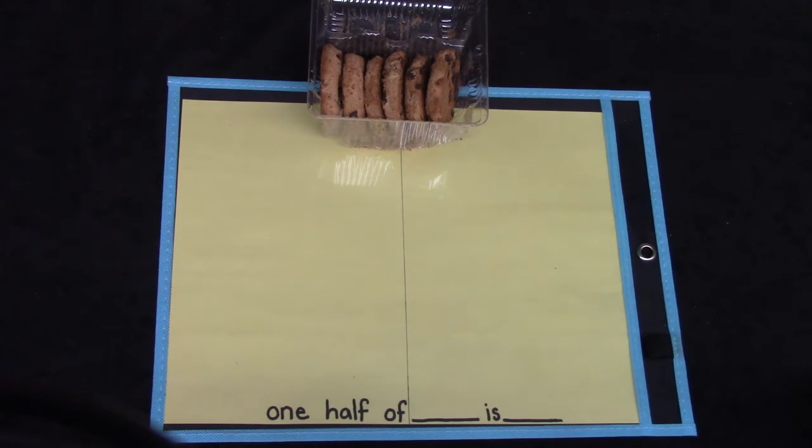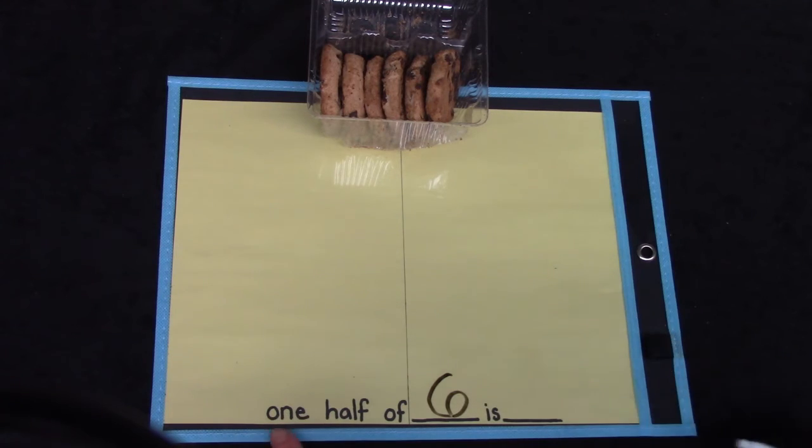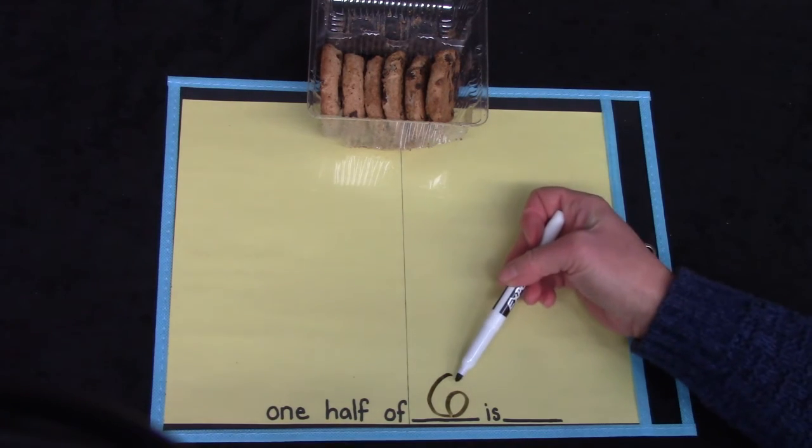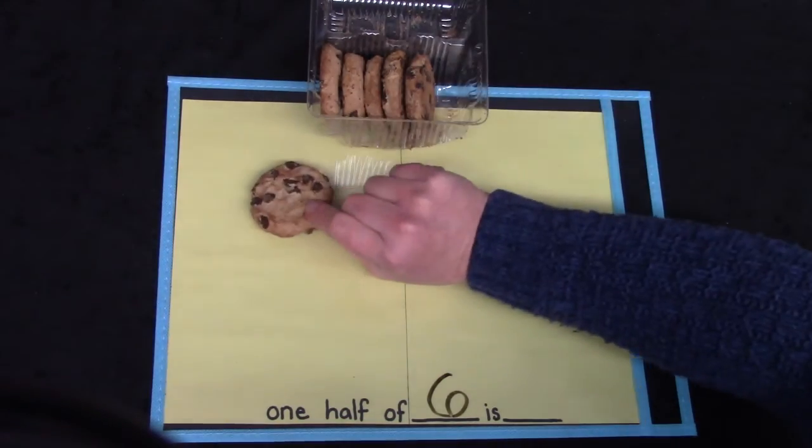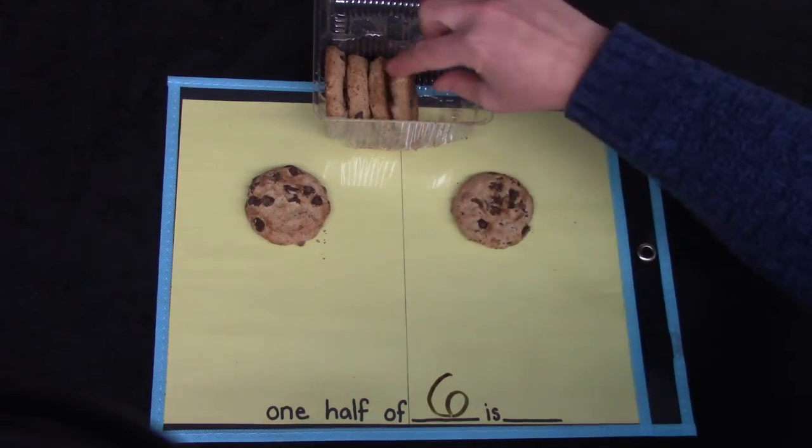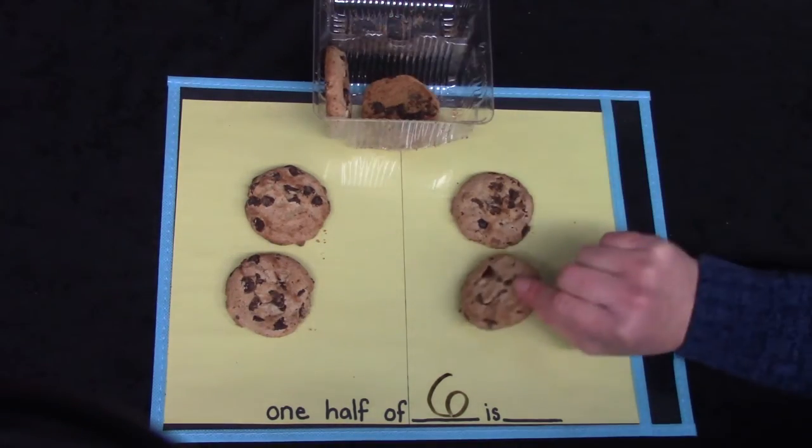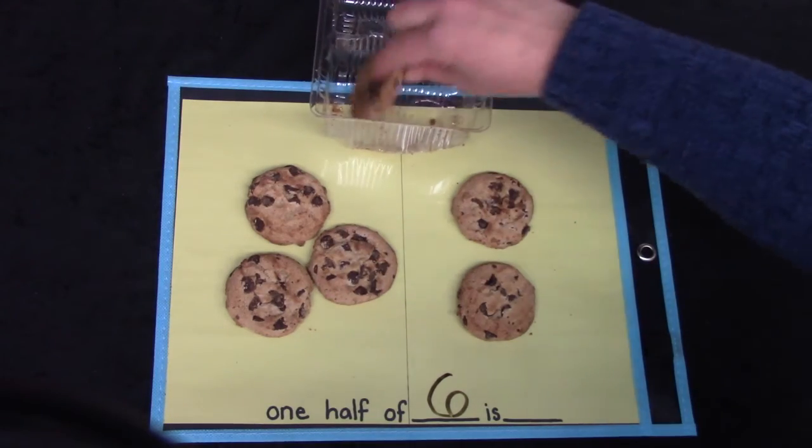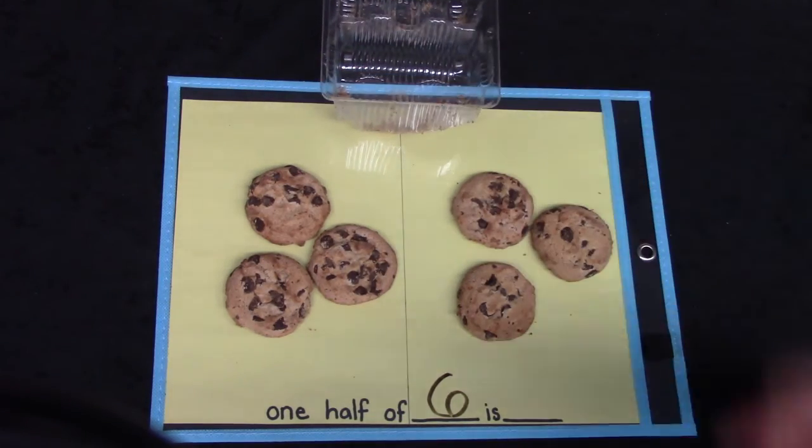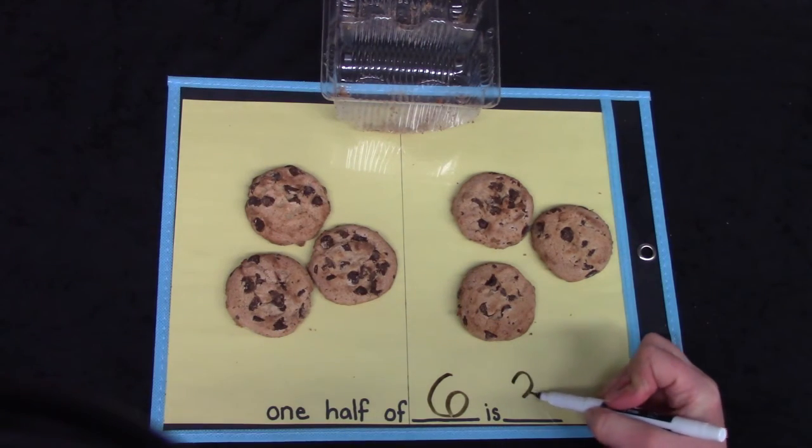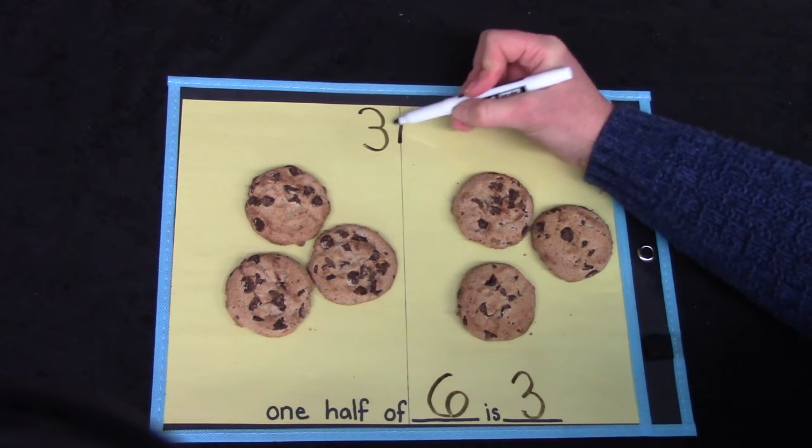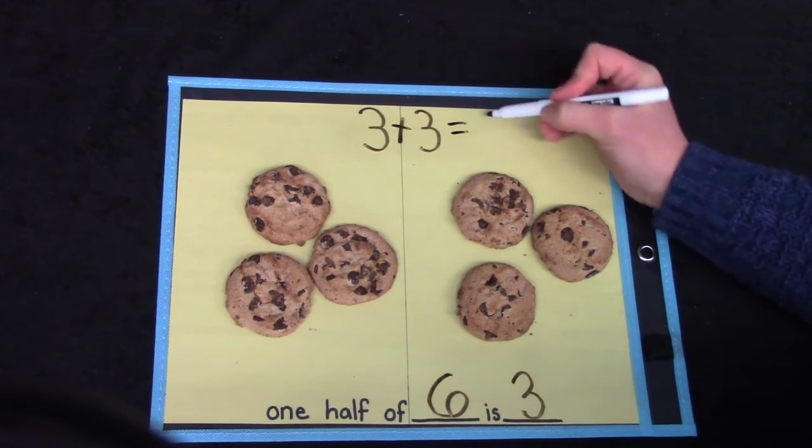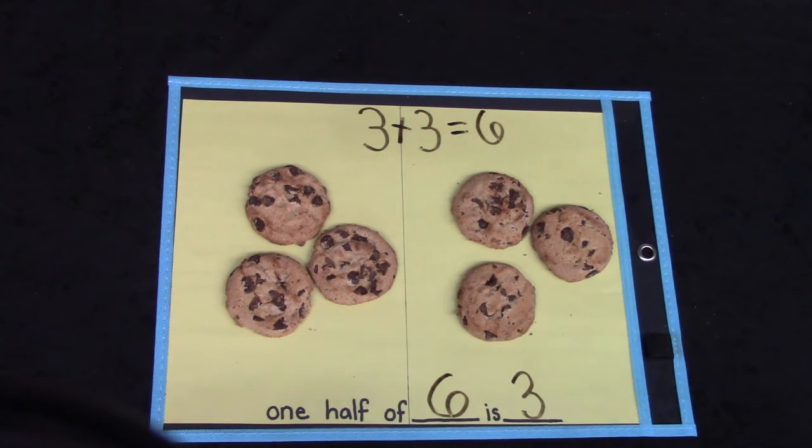Here I have some yummy cookies. There are six cookies in this package and we're going to find out one half of six. We need to put the same number of cookies on each side to share them. They each have one, two, three. One half of six is three. If you remember your doubles facts, you remember that three plus three equals six.